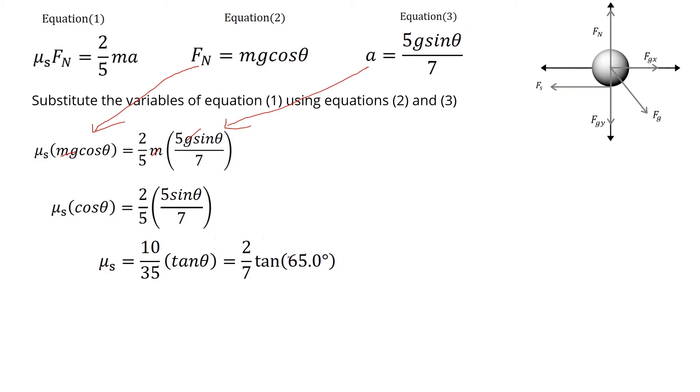Two times five equals ten, five times seven equals thirty-five. Plugging in the values, we will get 0.613. This is the minimum value of the coefficient of static friction.